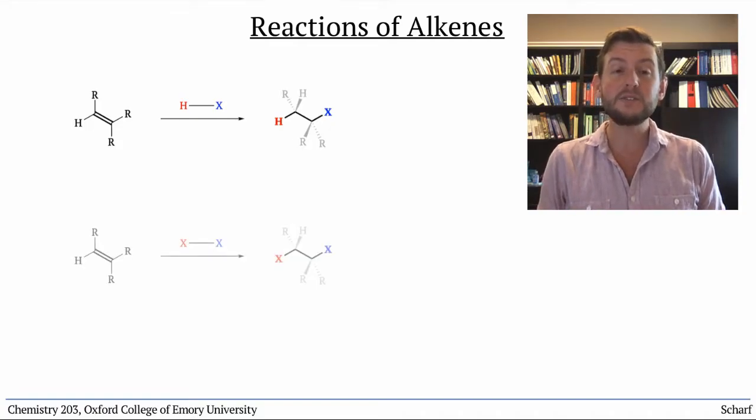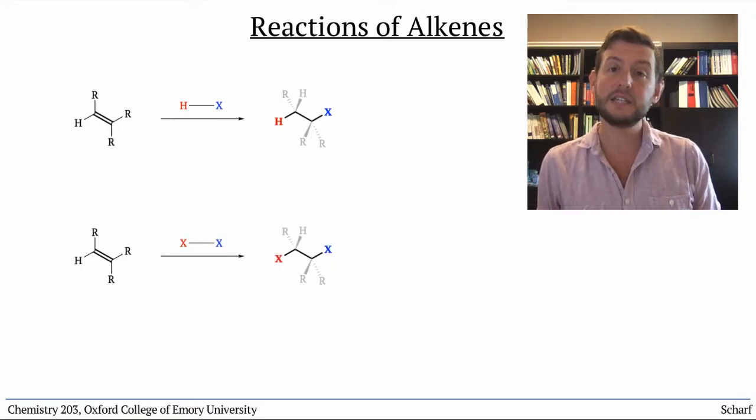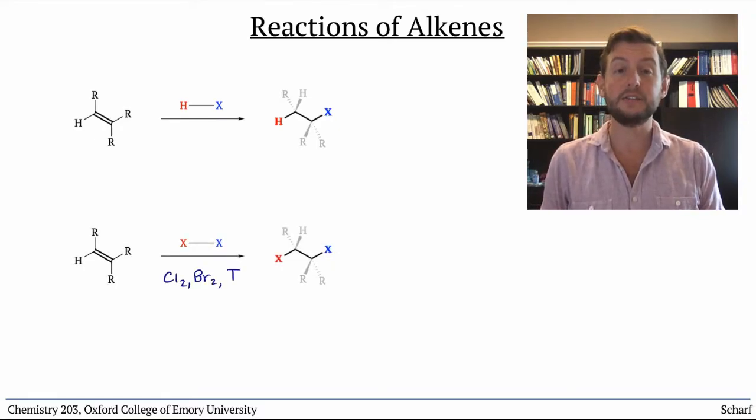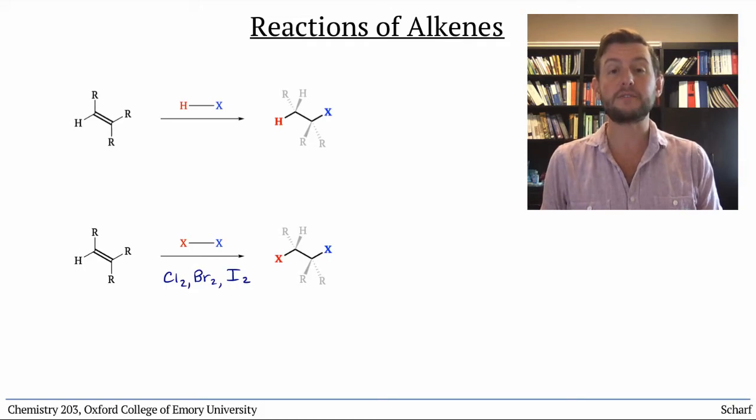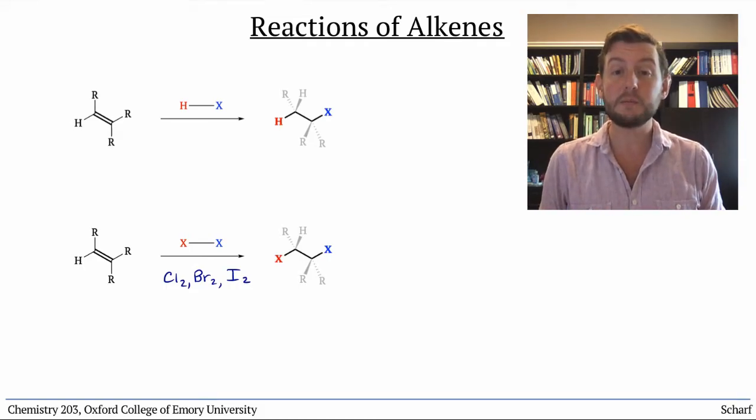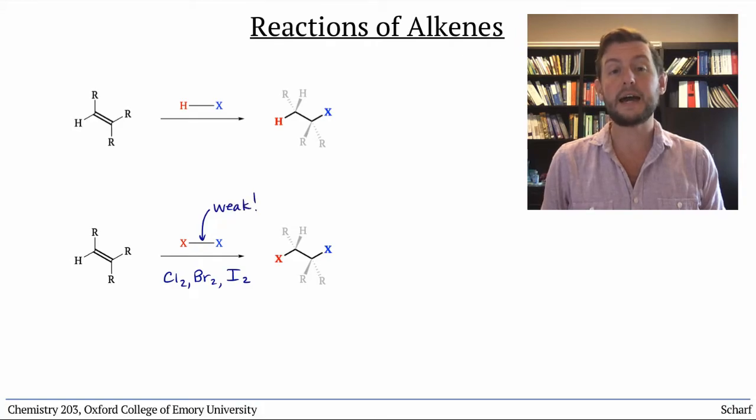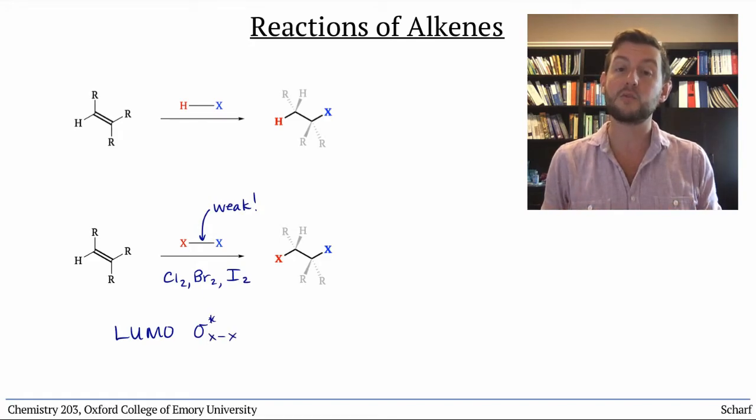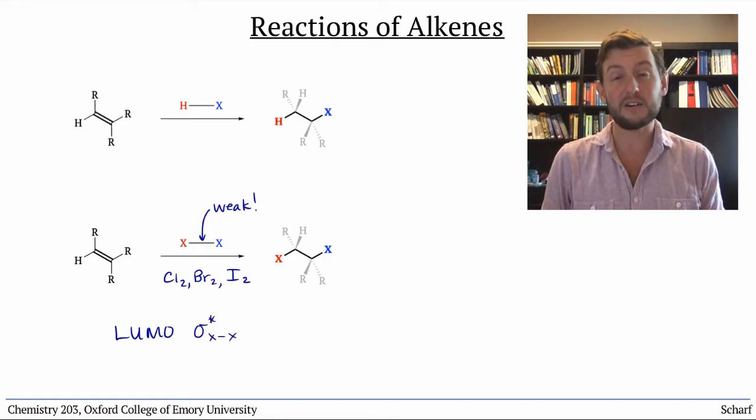The elemental dihalogens, Cl2, Br2, and I2, are also good electrophiles. They have very weak sigma bonds, in part because the atoms themselves are pretty large, and very low energy sigma star orbitals are actually very good electrophiles.